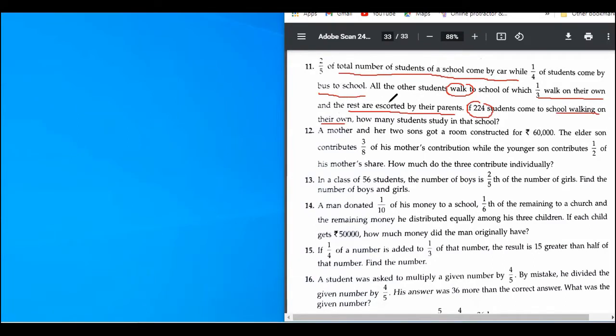Okay, not much information. Let us try to figure out - let's say there are total students in the school. Let us first divide it into categories. So how many categories are there? First category is car, they come by car. Second category is they come by bus. Third category is walk - walk alone and walk with parents. So there are four categories.